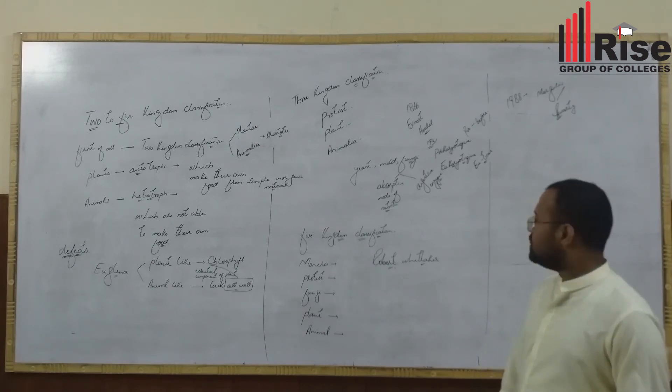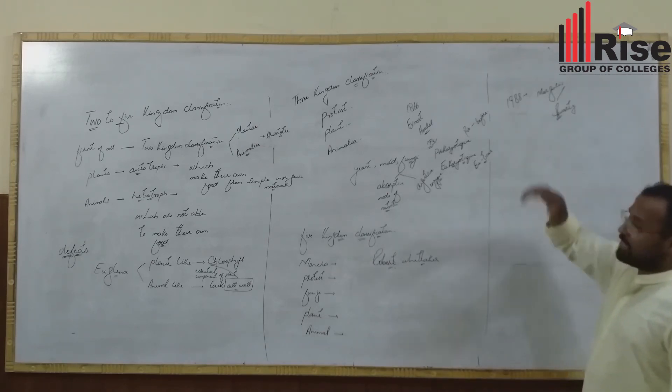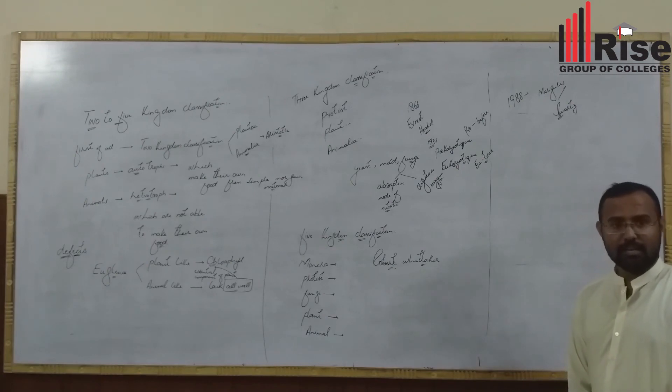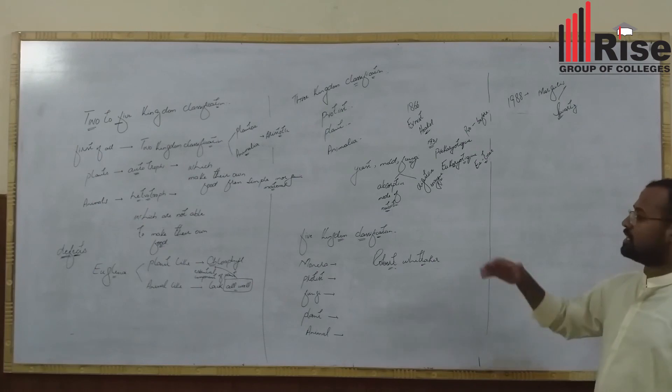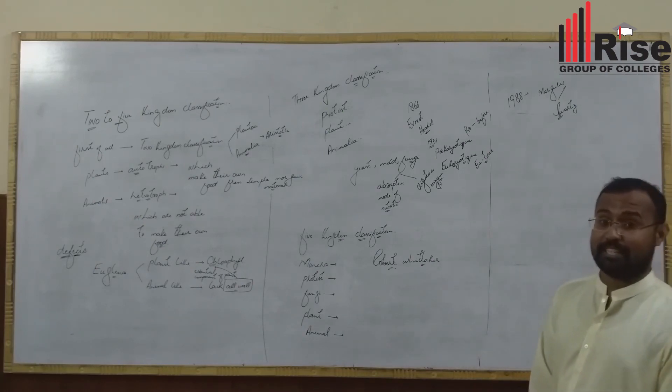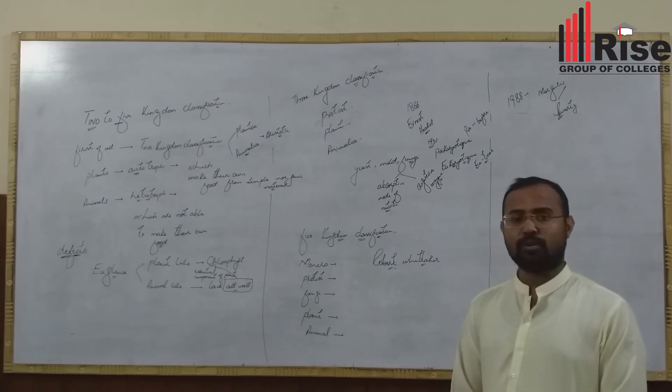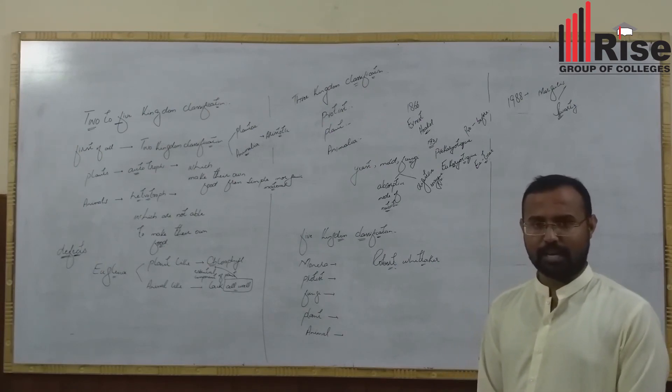In 1988, Margulis and Schwartz modified five kingdom classification. They said five kingdom classification should consider cytology, genetics, mode of nutrition, and cellular organization, and even self-replicating organelles like mitochondria and plastids.